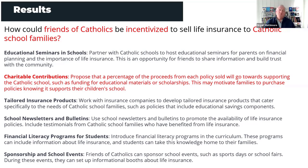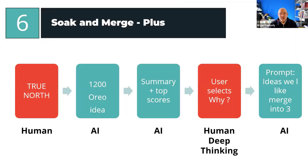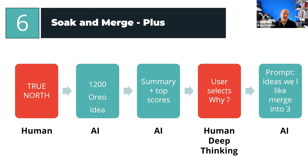The net of this: AI can do all the heavy lifting for generating specific questions. If you put a question like 'how can friends of Catholics be incentivized to sell life insurance to Catholic school families?' on a whiteboard for seven or ten days, you get all kinds of ideas because of the specificity. The way you bring it all together: start with the challenge as the human element, generate lots of ideas, score them with AI, do deep thinking, and then merge — combining ideas you like into one new, even better idea. That's something AI can do that human brains struggle with.